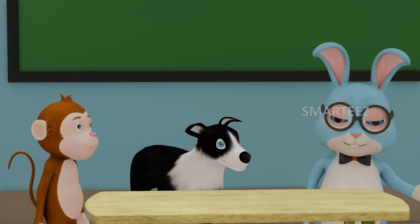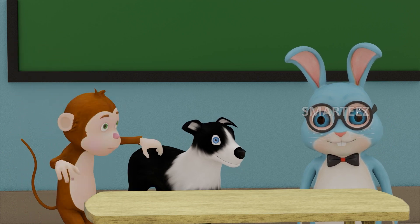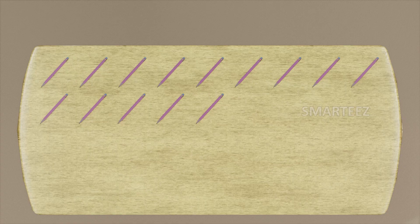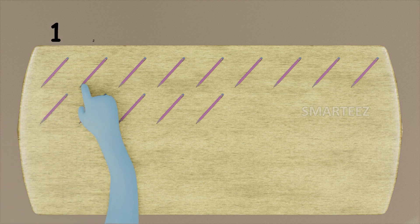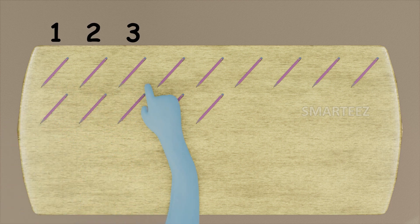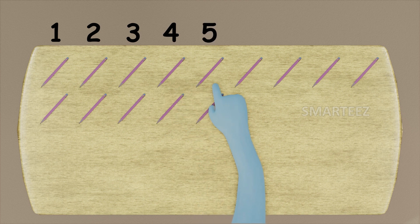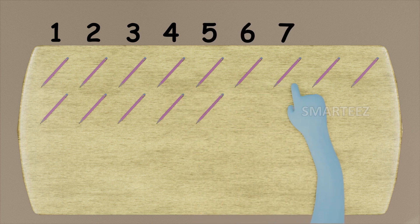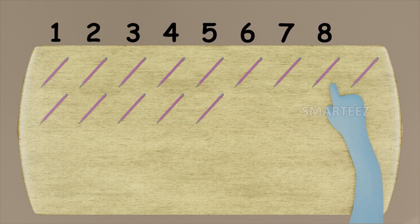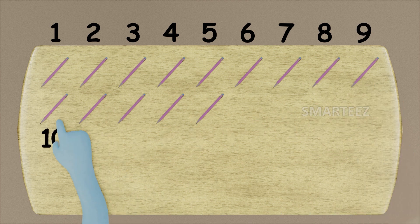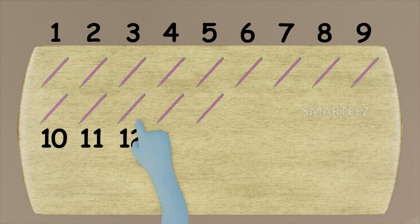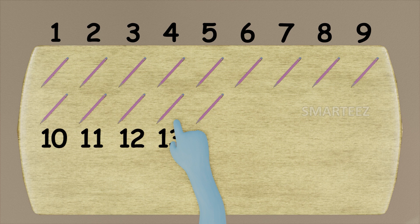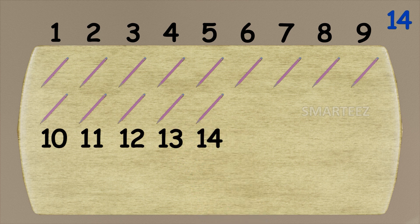This time I'm going to split pencils between Byra and Rangu. Let's see how many pencils we have here on the table. That's one, two, three, four, five, six, seven, eight, nine, ten, eleven, twelve, thirteen, and fourteen. We have a total of fourteen pencils.